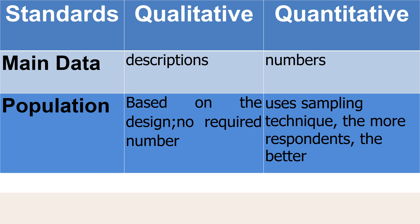For the population — a complete collection of elements, persons, or objects having some common characteristics identified by the researcher's sampling criteria — under qualitative research, the population is based on the design with no required number. Most likely, the population is smaller than in quantitative research, because under quantitative research, the more respondents, the better findings it could get.